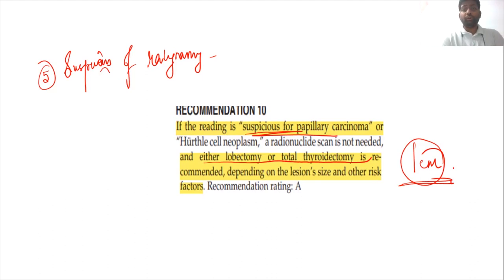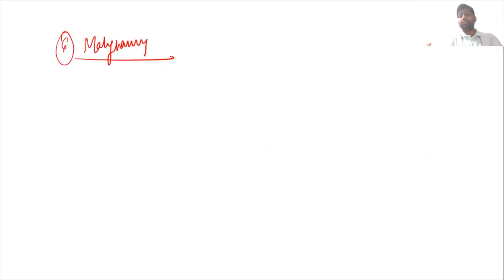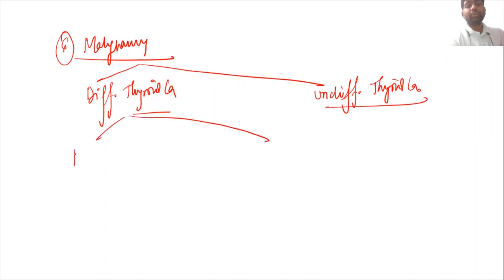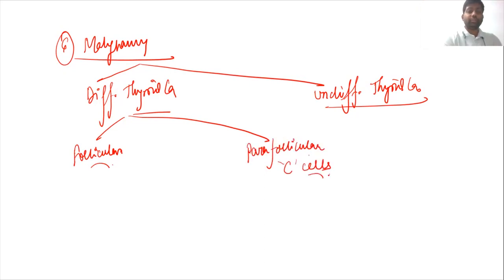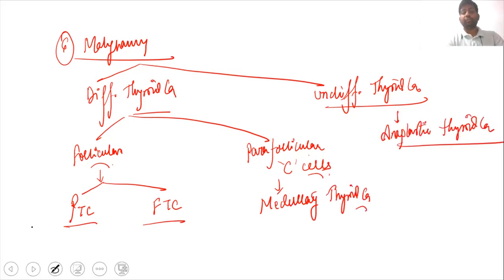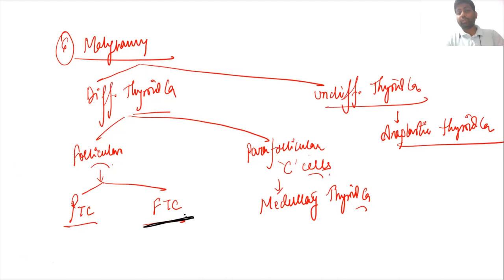If the FNAC report confirms malignancy, thyroid cancers are classified as differentiated or undifferentiated. Differentiated thyroid cancers from follicular cells include papillary thyroid cancer and follicular thyroid cancer; from parafollicular C cells comes medullary thyroid cancer. Undifferentiated thyroid cancer is anaplastic thyroid cancer. FNAC can identify papillary, medullary, or anaplastic thyroid cancer but cannot differentiate follicular carcinoma from follicular adenoma.